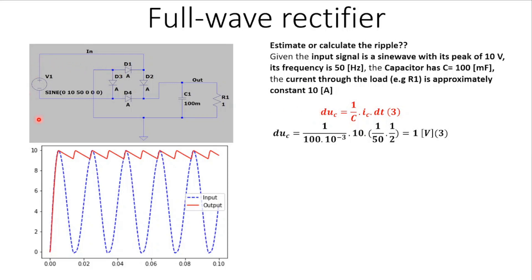This is the circuit of our full wave rectifier, consisting of the AC voltage source, the ideal diodes, the capacitor, and the load. The blue dashed line is the input signal measured at the input point, and the red signal is the signal measured at the output point.